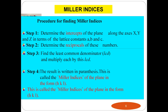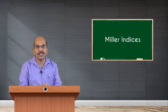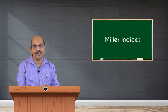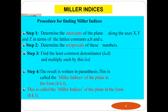To get the Miller index of a particular plane: first, determine the intercepts of the plane along x, y, and z directions in terms of lattice constants a, b, and c — for example, 2a along x, 3b along y, and 4c along z. Next, determine the reciprocals of these numbers. Then find the least common denominator (LCD) and multiply each reciprocal by the LCD. The result, written in parentheses, is the Miller index of the plane in the form (hkl).